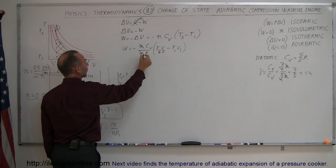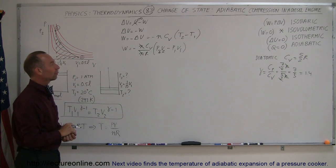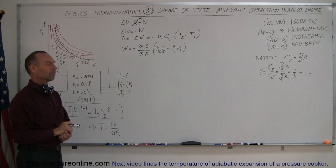The n's cancel out, so we end up with work is equal to negative C_V divided by R times P2V2 minus P1V1. Now, which of those quantities do we have?